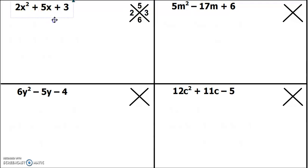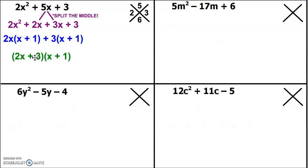Now I can split the middle into 2x squared plus 2x plus 3x plus 3. What do 2x squared and 2x have in common? They have a 2x in common, so I'm left with x plus 1. Plus 3x plus 3 have a 3 in common. So I have 2x plus 3 and x plus 1 as my factors.